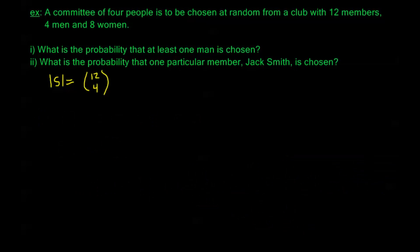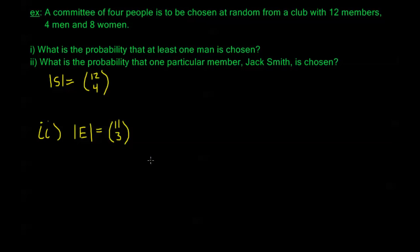For part two: what is the probability that one particular member, Jack Smith, is chosen? If Jack Smith is chosen, my event space E consists of all committees that include Jack Smith. The question is how many ways are there to create four-person committees that contain Jack Smith — that's the same as the number of ways to choose three-person committees from the remaining eleven members, or eleven choose three. For each of those three-person committees, I can add Jack Smith, giving a different four-person committee.